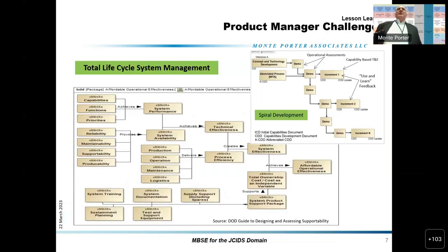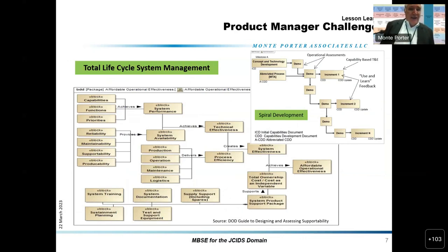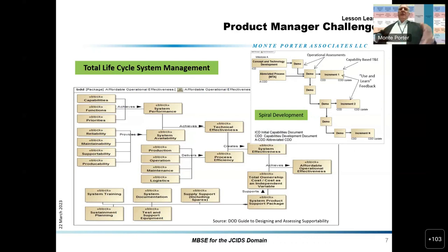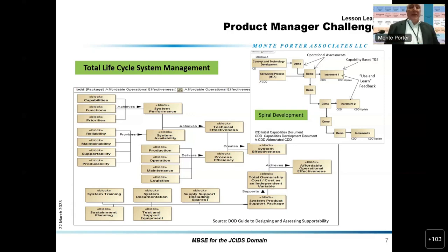The product manager also has other challenges outside of system engineering. Looking at total life cycle system management, he's got to be concerned about providing system availability, process efficiencies, training, parts, et cetera. We show the process of how ICDs flow in — you get an ICD, then a CDD, you test it, and if it works, you go into the field with the first increment, then the second and third. If a requirement doesn't come into play, it becomes part of the next increment. That spiral development process is something we have to deal with at the PM and PEO level.